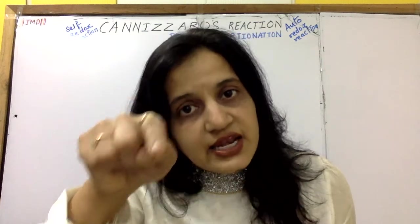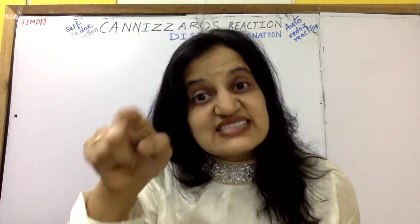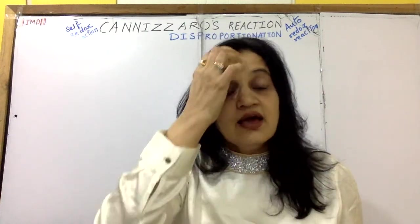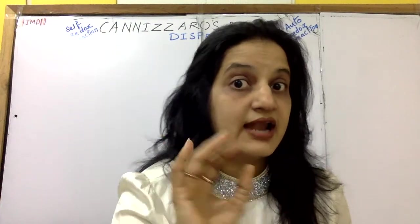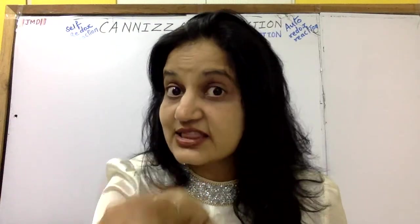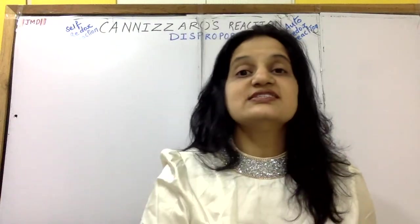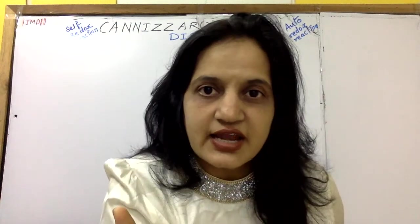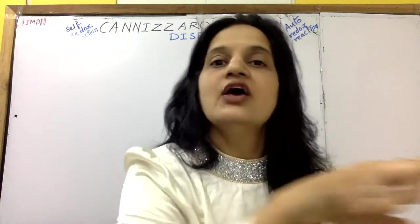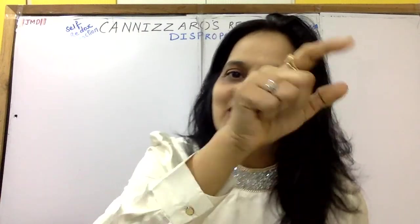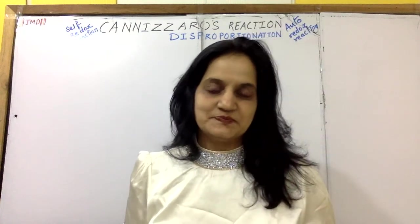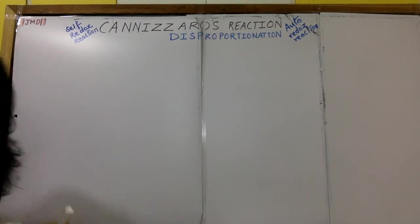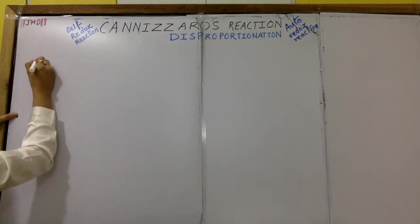For NaOH to have its OH⁻ behave as a nucleophile, it must attack the carbonyl carbon — and that attack is quite difficult. That is why Cannizzaro's reaction is carried out in the presence of concentrated NaOH, unlike aldol condensation which uses dilute NaOH. Now I'll write the general reaction before covering the mechanism.